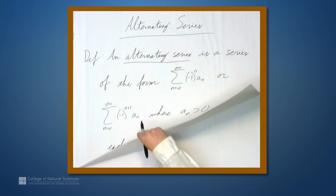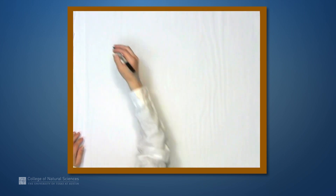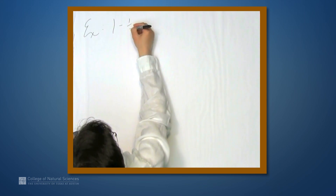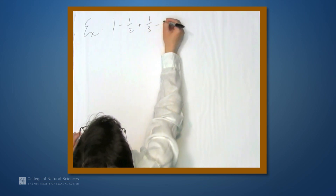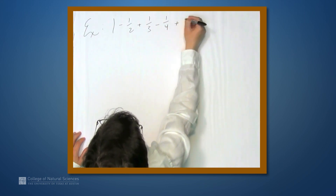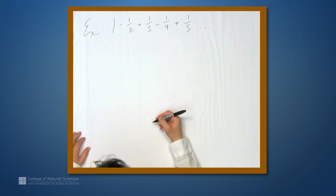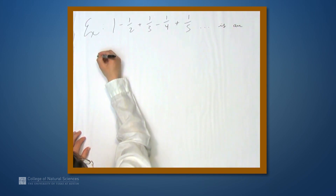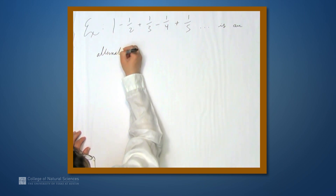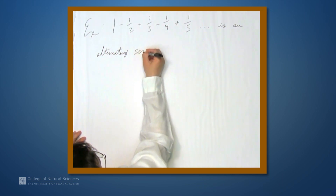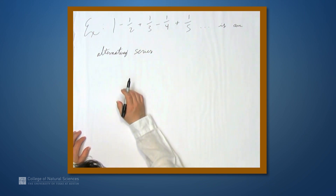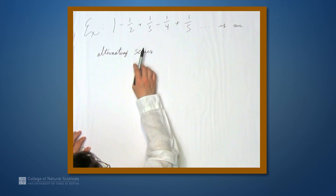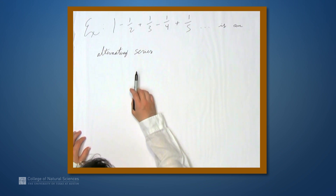Let's look at a few examples. The series 1 minus 1/2 plus 1/3 minus 1/4 plus 1/5 dot dot dot is an alternating series. In fact, it has a particular name. Remember, the series 1 plus 1/2 plus 1/3 plus 1/4 and so on is the harmonic series. This series is called the alternating harmonic series.